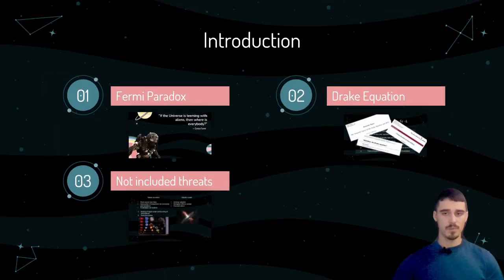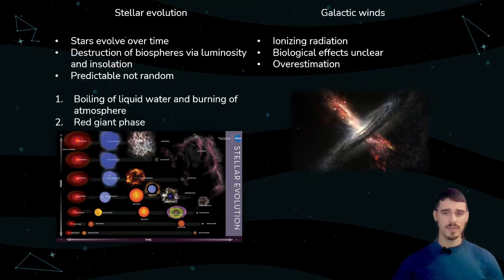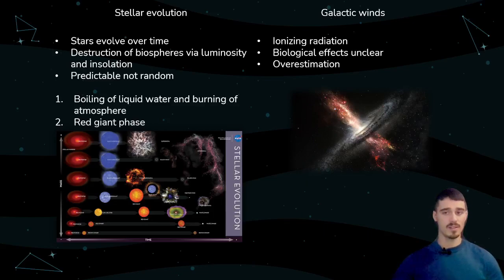Let us wrap this section up with some threats that are not included in this paper. We are going to investigate different astrophysical threats in detail that possibly pose a danger to our society. Not included are stellar evolution — all stars evolve over time following their evolutionary cycle. However, this is not random; it follows a long, predictable path and is due to that most likely not a primary cause of ETI extinction.